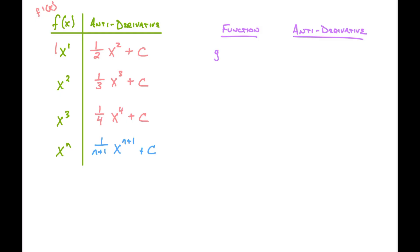Let's apply this with g of x equaling x to the negative three power. Following the power rule, n equals negative three. So the anti-derivative is going to be one over negative three plus one, times x to the negative three plus one, plus C. When I simplify this, that's going to be negative one half x to the negative two power, plus C. This is the anti-derivative of that function.